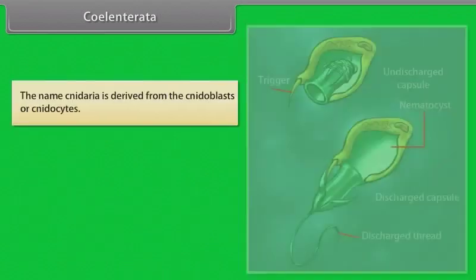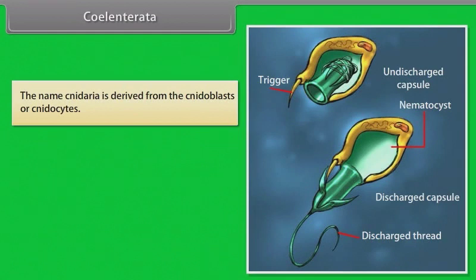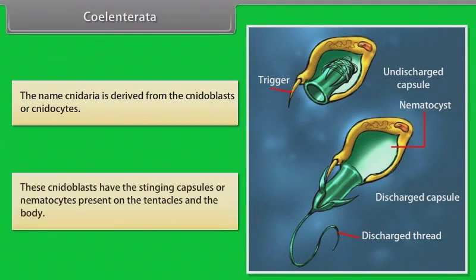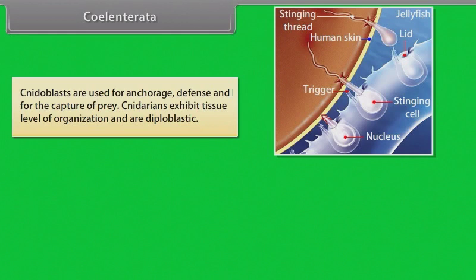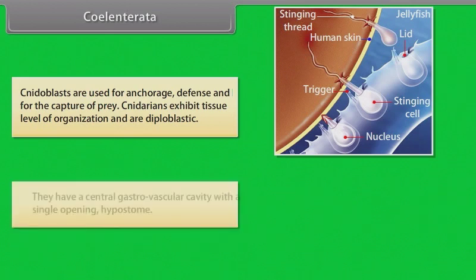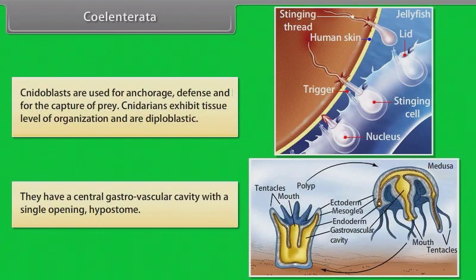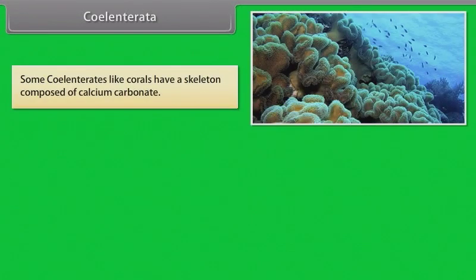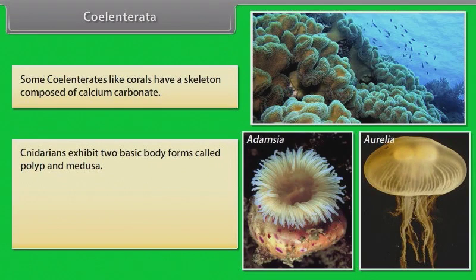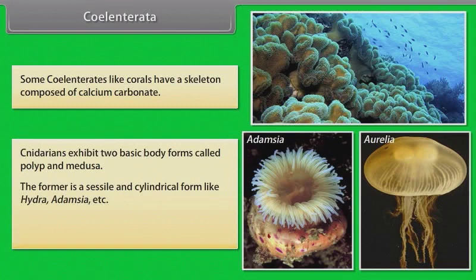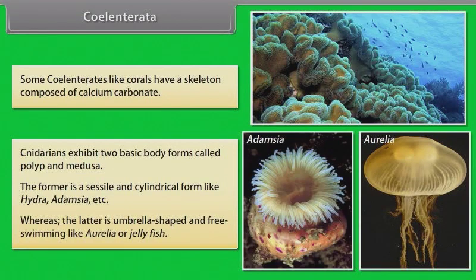Coelenterata: The name Cnidaria is derived from the cnidoblasts or cnidocytes. These cnidoblasts have stinging capsules or nematocysts present on the tentacles and the body. Cnidoblasts are used for anchorage, defense and for capture of prey. Cnidarians exhibit tissue level of organization and are diploblastic. They have a central gastrovascular cavity with a single opening called the hypostome. Some coelenterates, like corals, have a skeleton composed of calcium carbonate. Cnidarians exhibit two basic body forms: polyp and medusa. The polyp is a sessile and cylindrical form, like Hydra, while the medusa is umbrella-shaped and free swimming, like Aurelia or jellyfish.